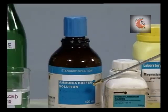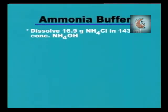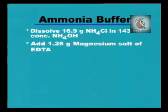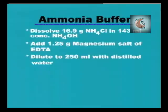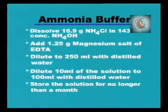The ammonia buffer is readily available, or it can be prepared by dissolving 16.9 gram of ammonium chloride in 143 ml of concentrated ammonium hydroxide, then add 1.25 gram of magnesium salt of EDTA and dilute to 250 ml with distilled water. Dilute 10 ml of this solution to 100 ml with distilled water, and store for no longer than 1 month.